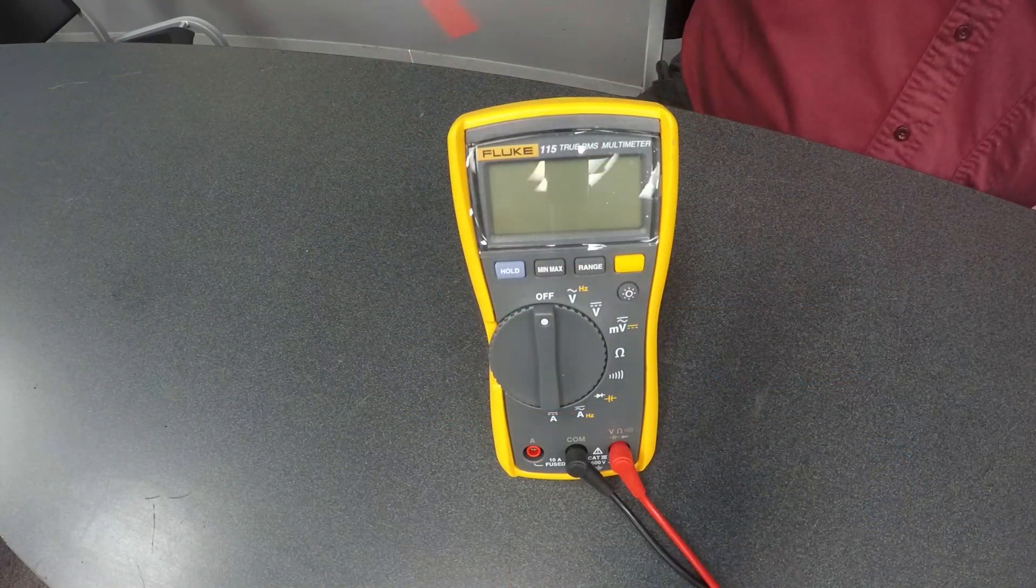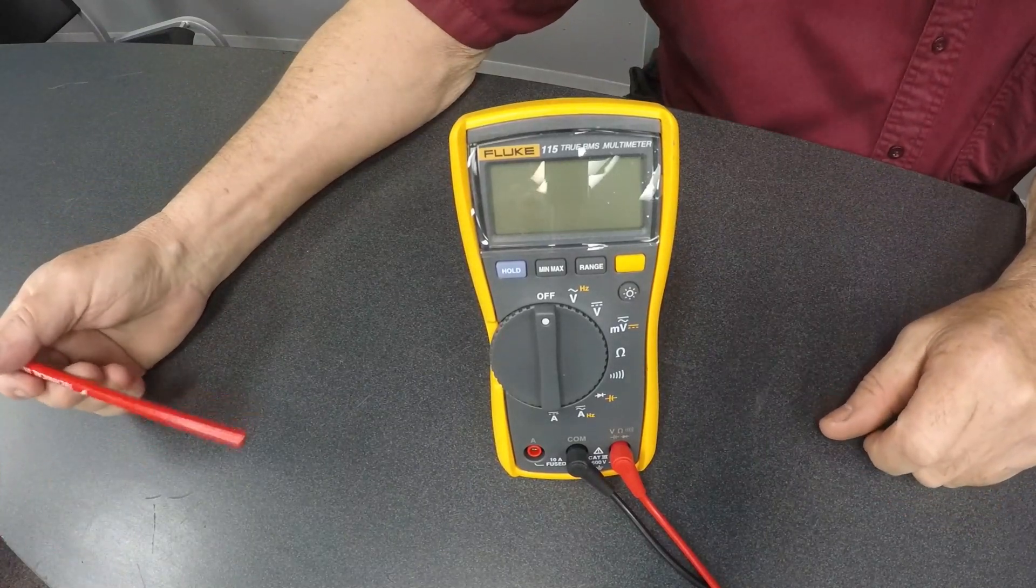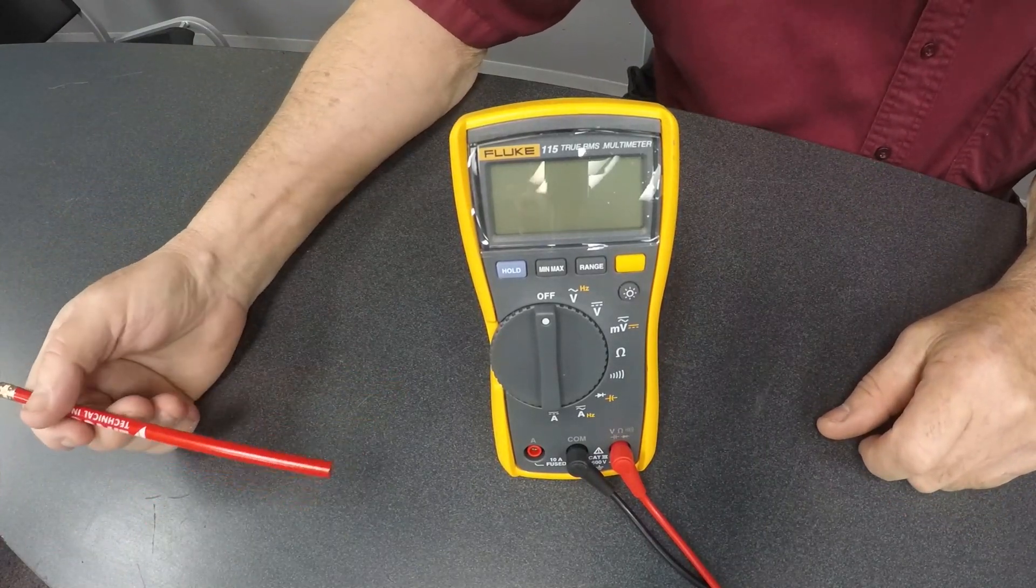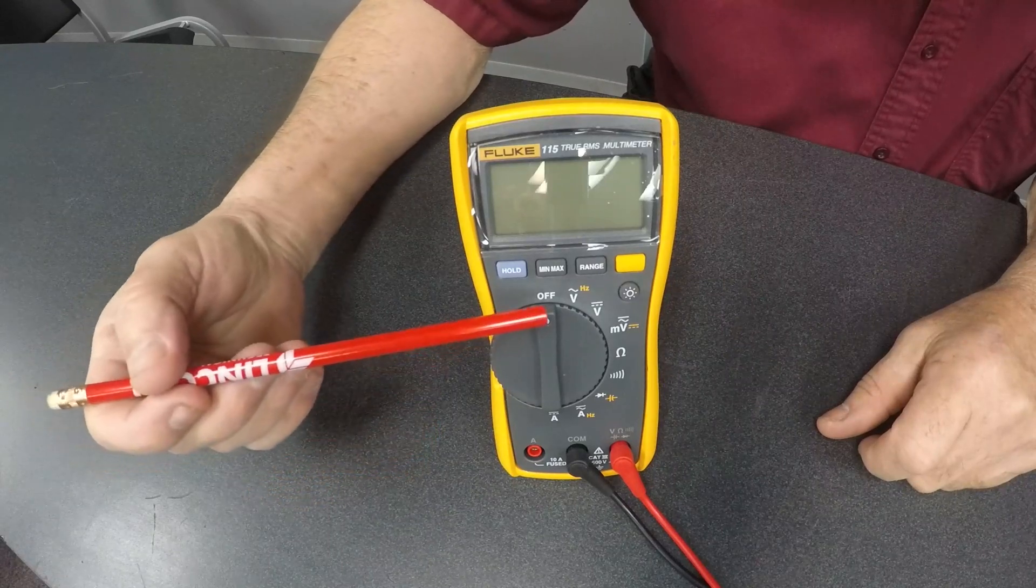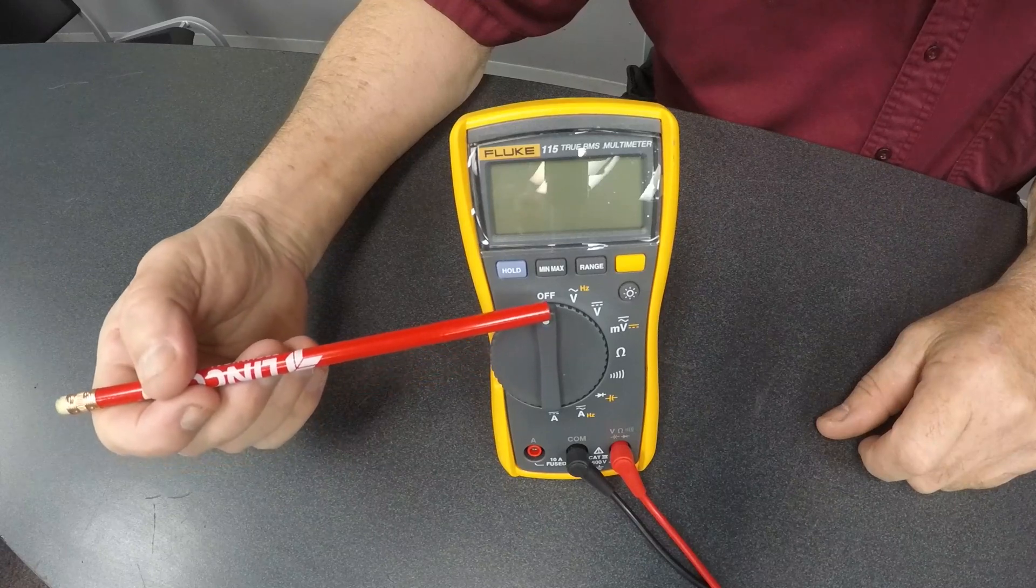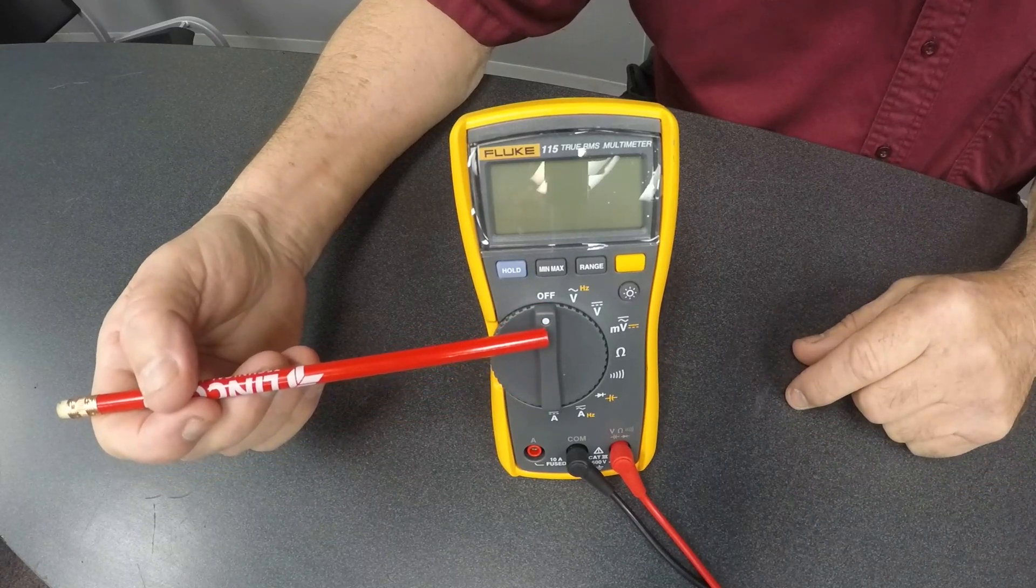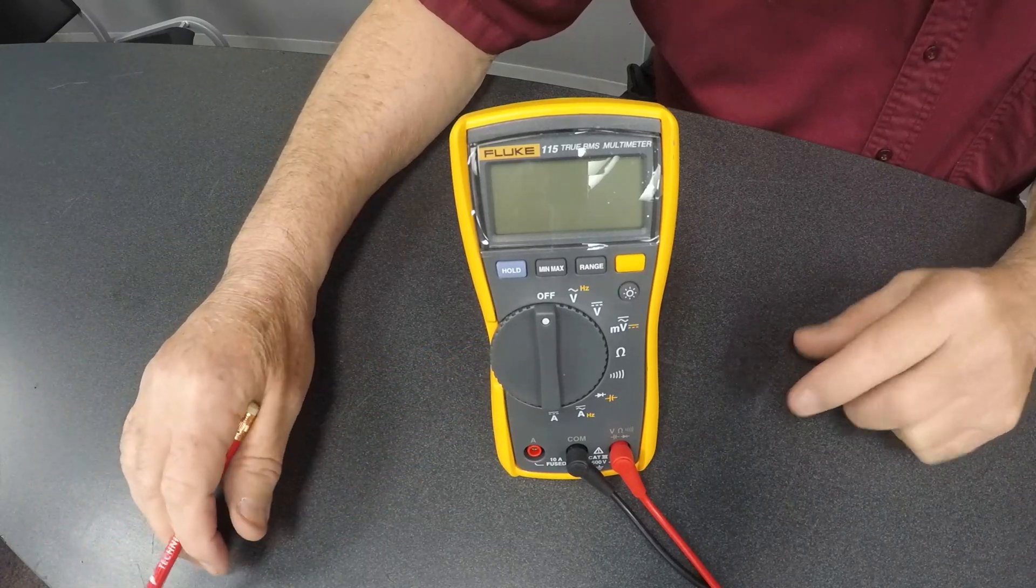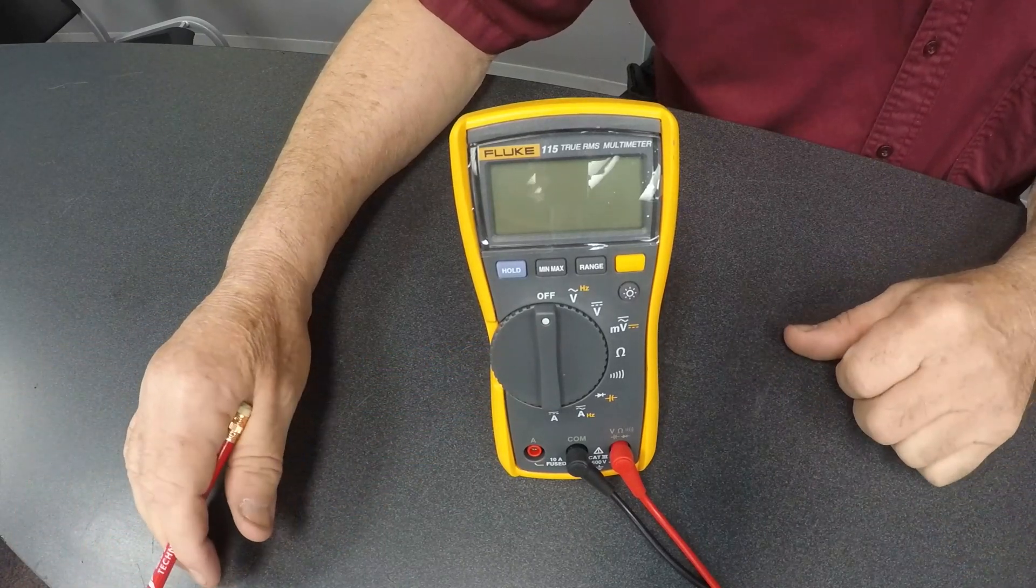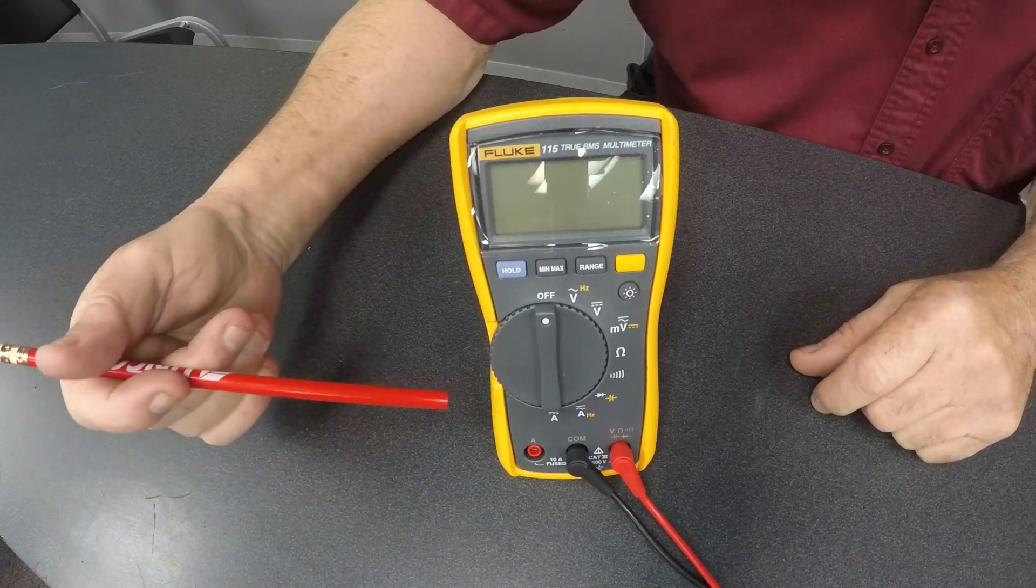So we're talking about the Fluke 115 here, and this is a true RMS multimeter, RMS meaning for AC voltage. The first thing you can see is the off position. Being this is a digital multimeter, this is also an auto-ranging meter. Auto-ranging meaning we don't have to do anything. The meter itself will do all the thinking for us unless we need to do something specialized.